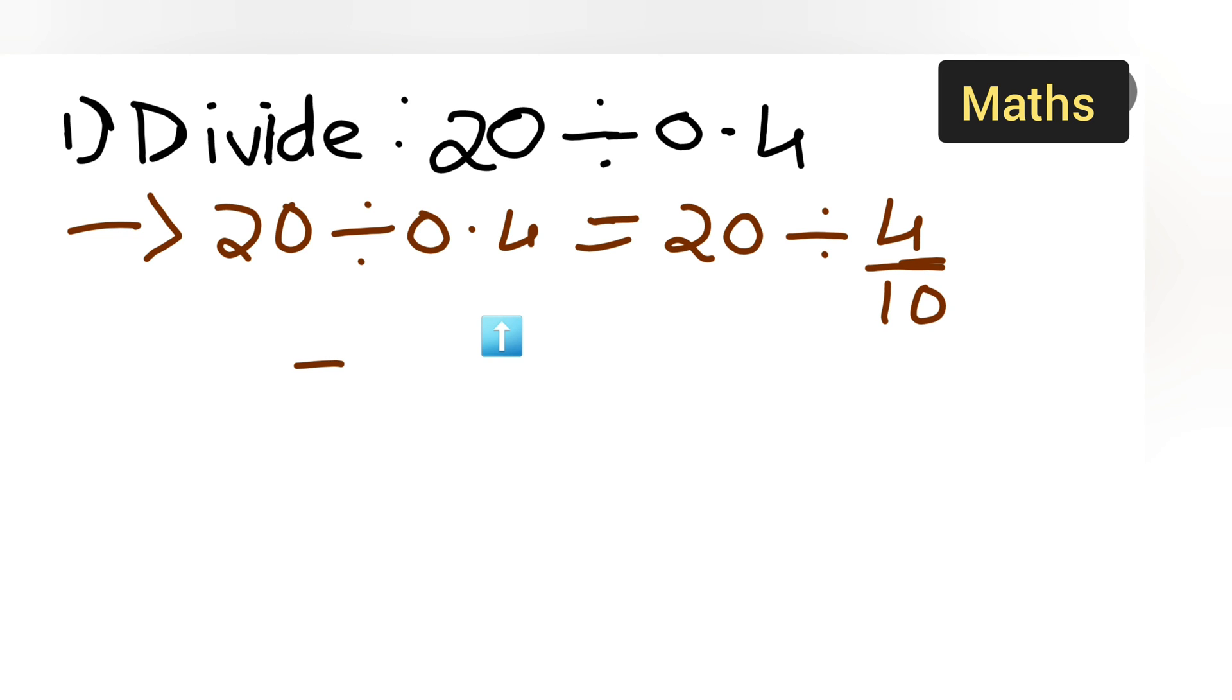Now, basically this is equal to 20 multiplied by the reciprocal. So it will be 10 upon 4.